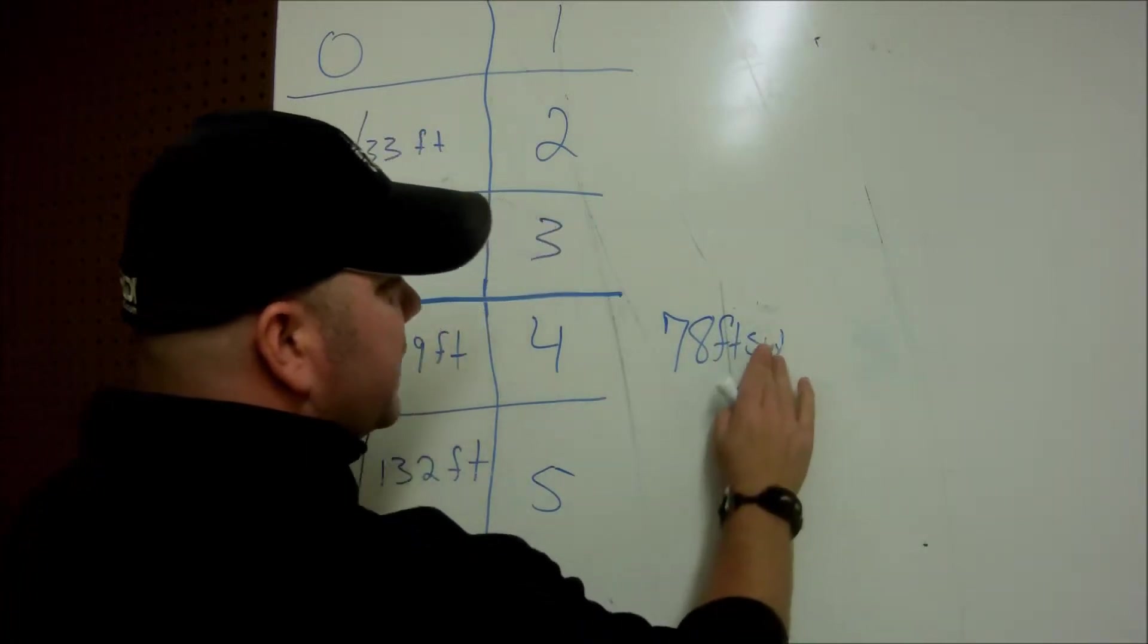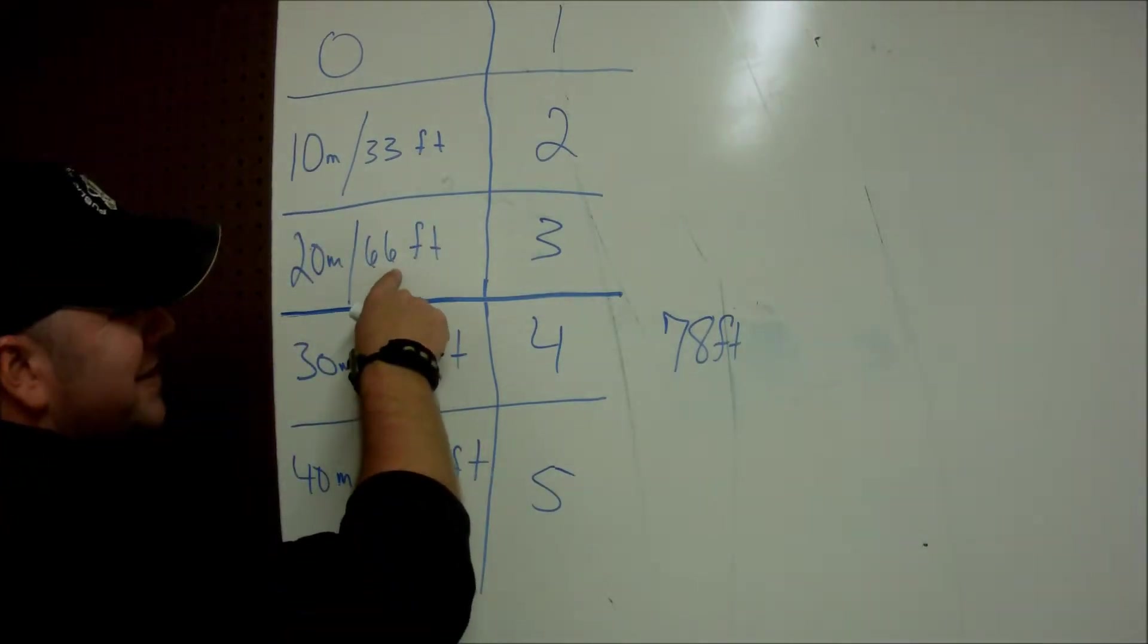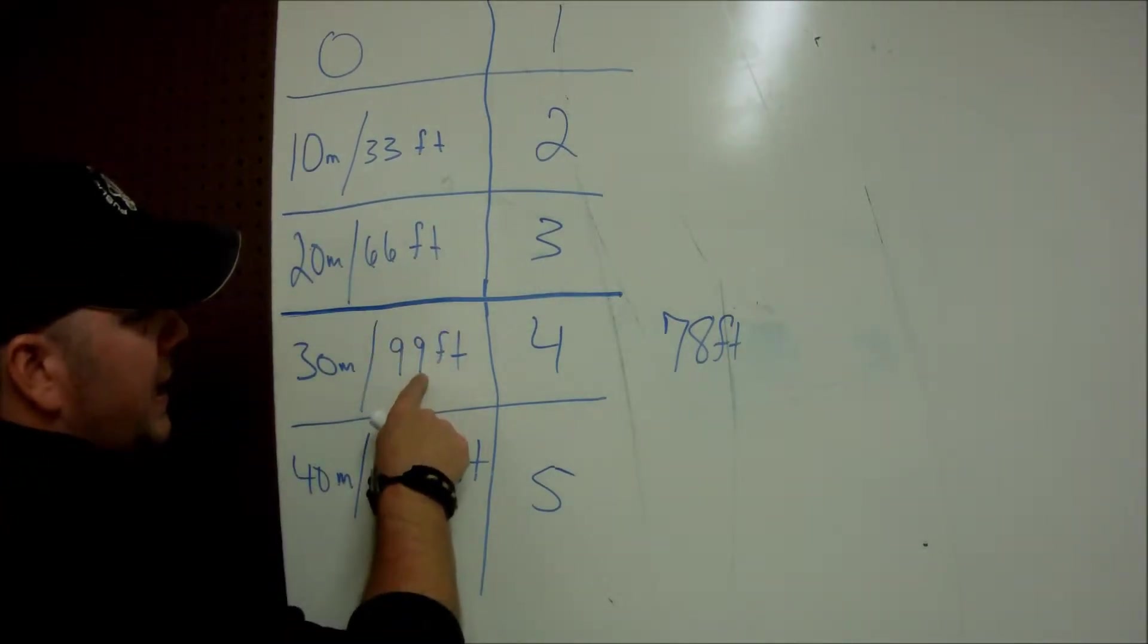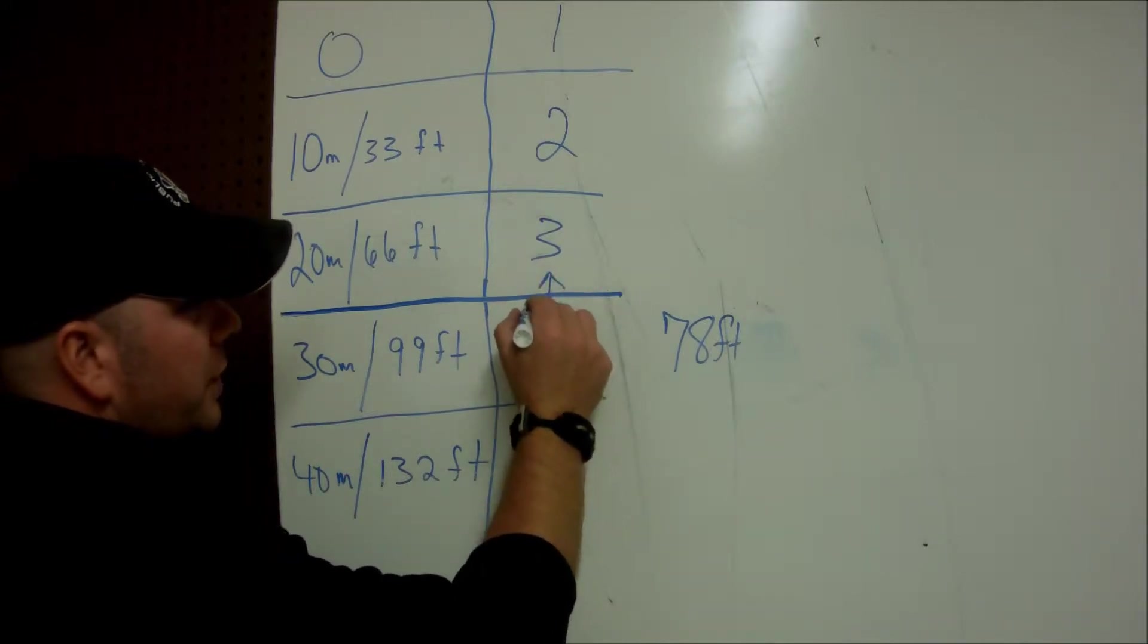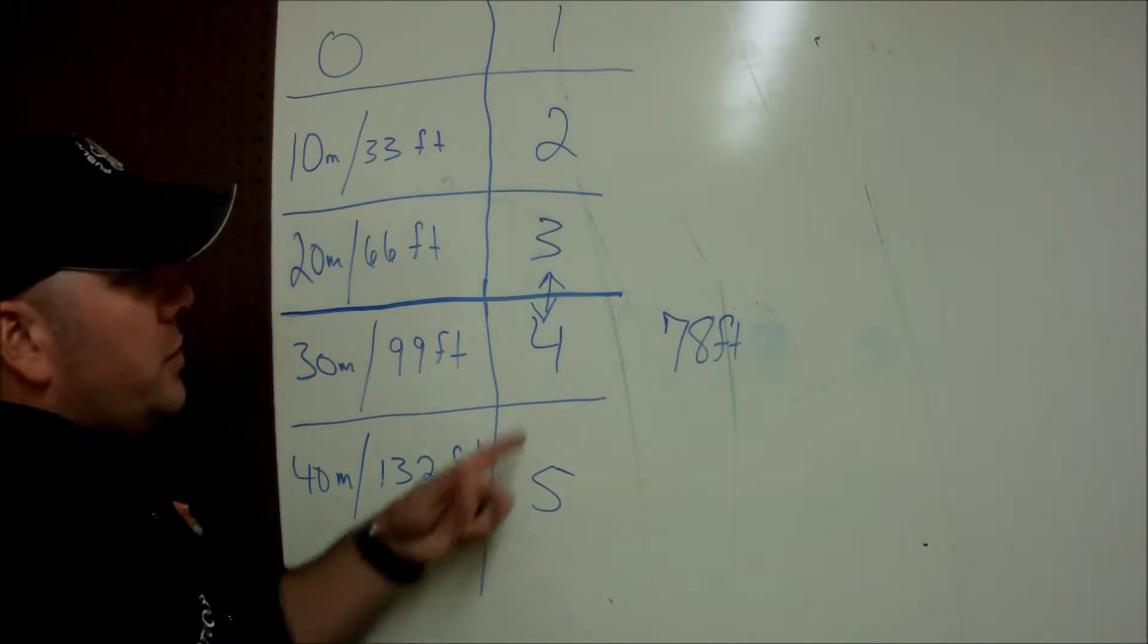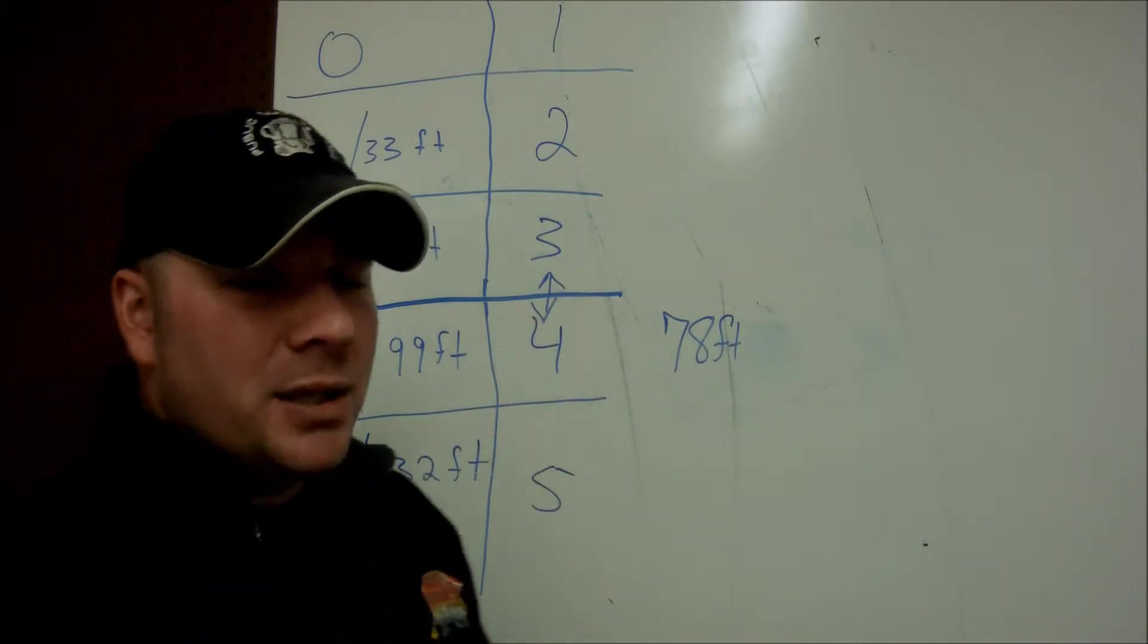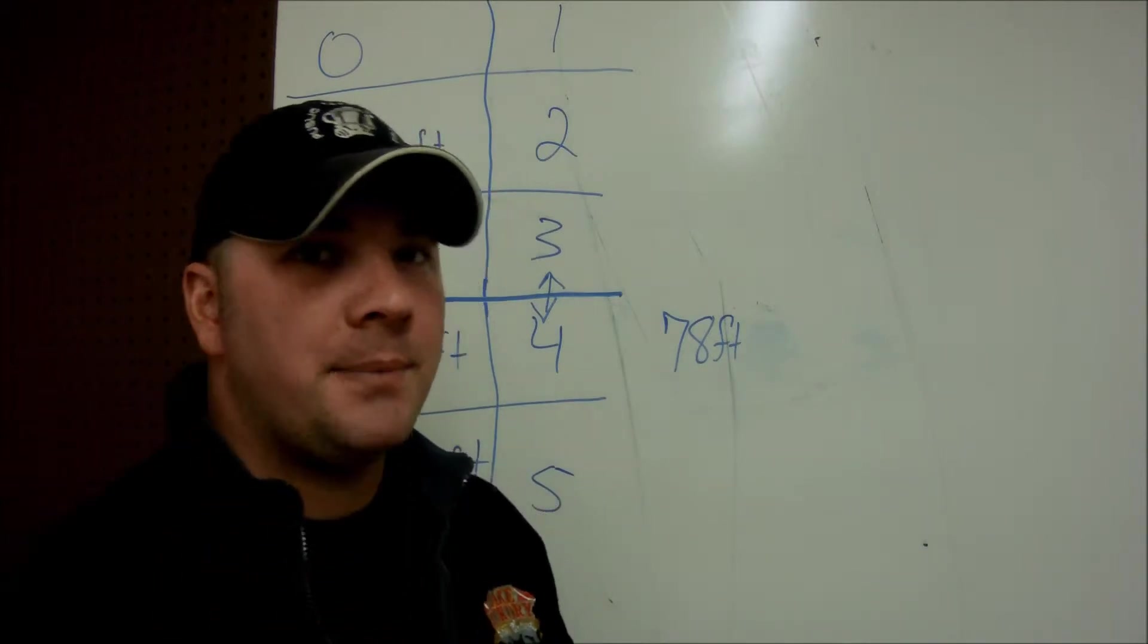So for instance, let's say that I'm working with 78 feet of salt water. That 78 feet of salt water falls somewhere between 66 feet and 99 feet. So I know that I'm going to be at least three atmospheres, but not quite four atmospheres. So I've got a good general idea of where I'm at, what my atmosphere is, but I don't have the absolute.